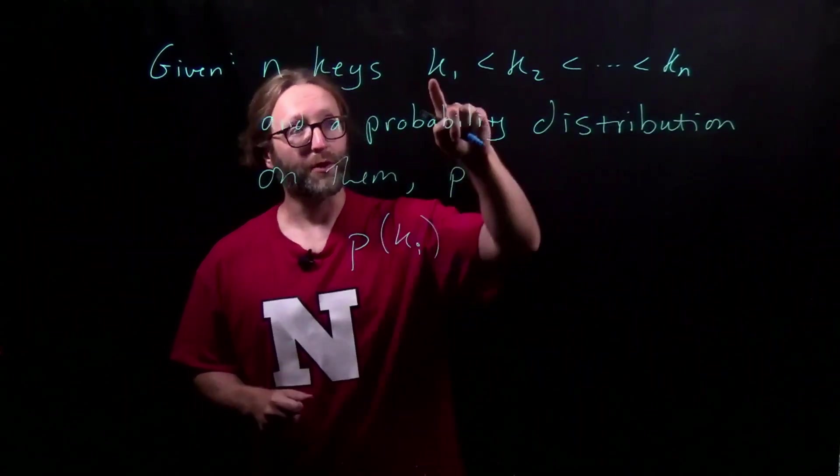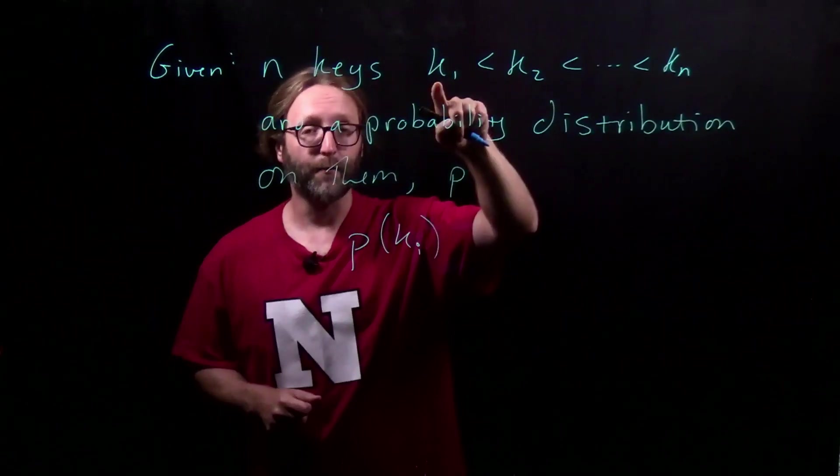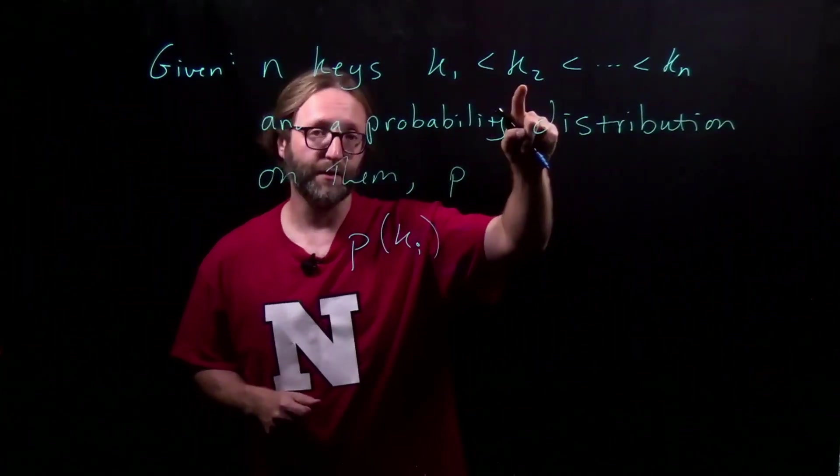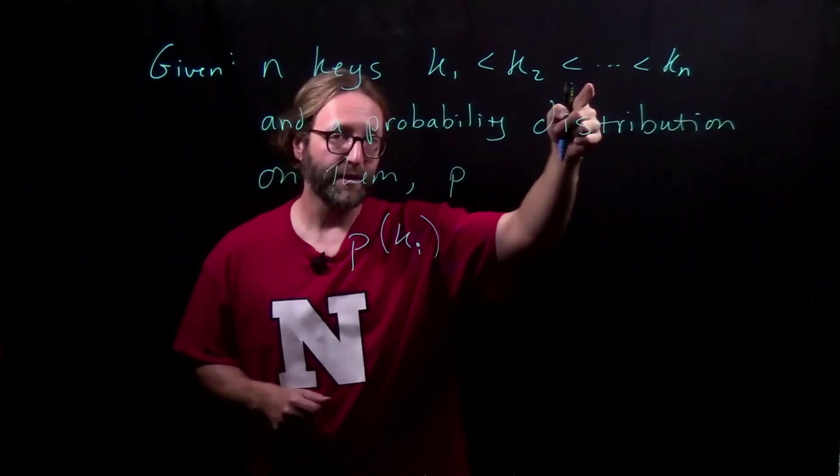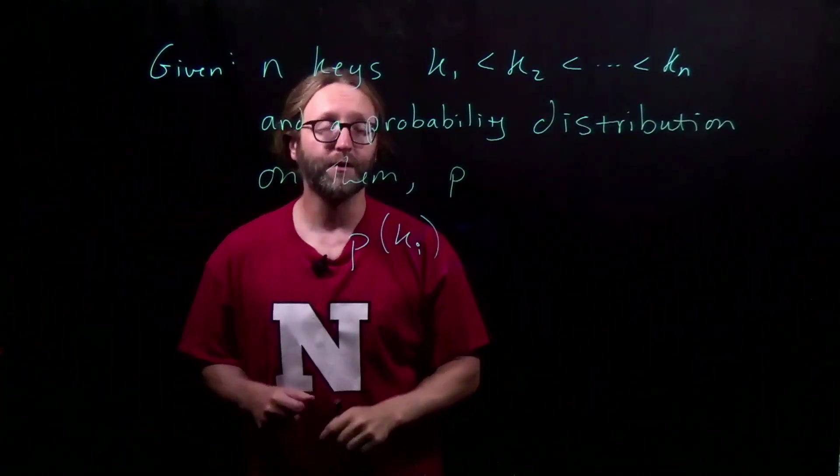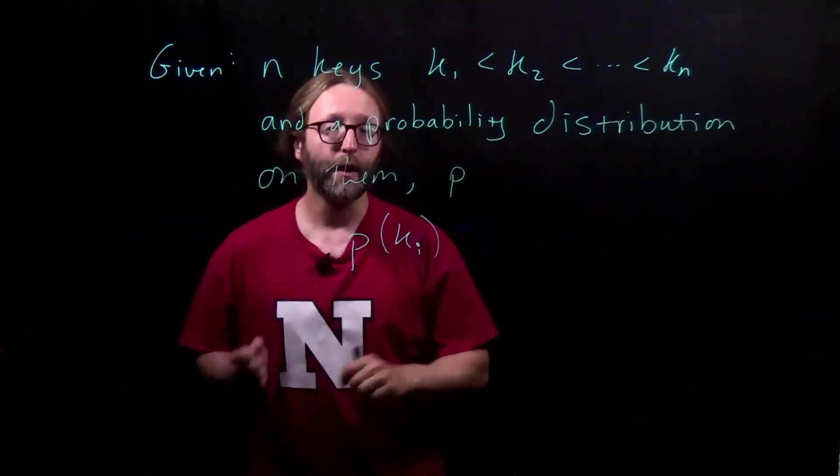For example, you could say that 50% of the time you're going to be searching for key 1, 10% of the time for key 2, only 5% of the time for key 3. In other words, some keys are more likely to be searched than other keys.